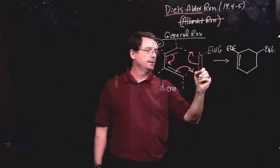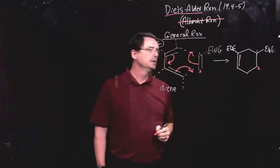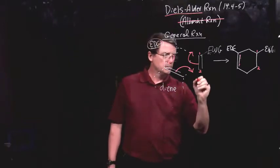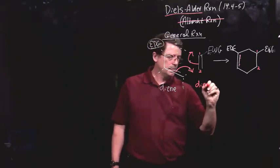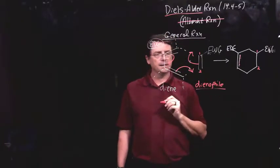So, if I go around that ring, one, two, there are my atoms, one, two, from the other partner. By the way, this one is called the dienophile. Okay, that is the lover of dienes. So, it reacts with dienes.